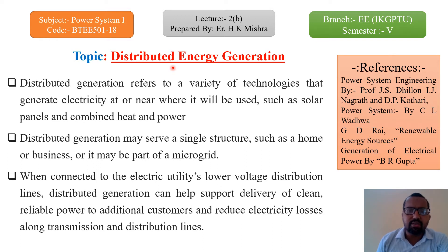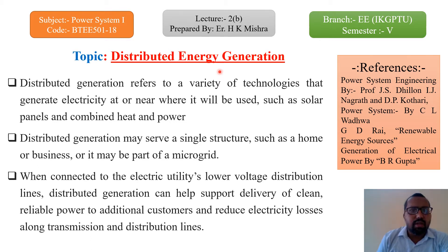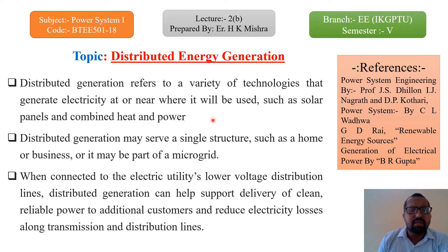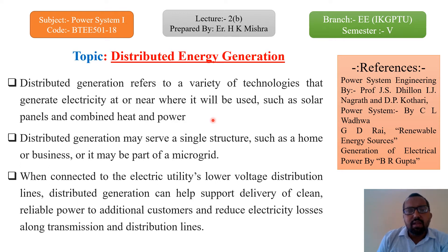We will also cover how many types there are and where the applications are. You can refer to different books mentioned in my previous lectures. The topic is: distributed generation refers to a variety of technologies that generate electricity at or near where it will be used, such as solar panels and combined heat and power. It is a small-size generating power plant located near the utility area.